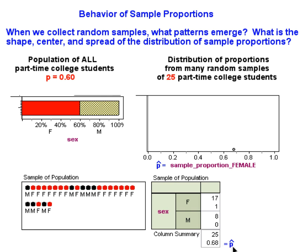We will graph each p-hat above to generate a graph of the sampling distribution of sample proportions. Let's collect a second random sample and see what happens. This time, we got 18 out of 25 of the students being female, which is a sample proportion of 0.72. We see that graphed here.